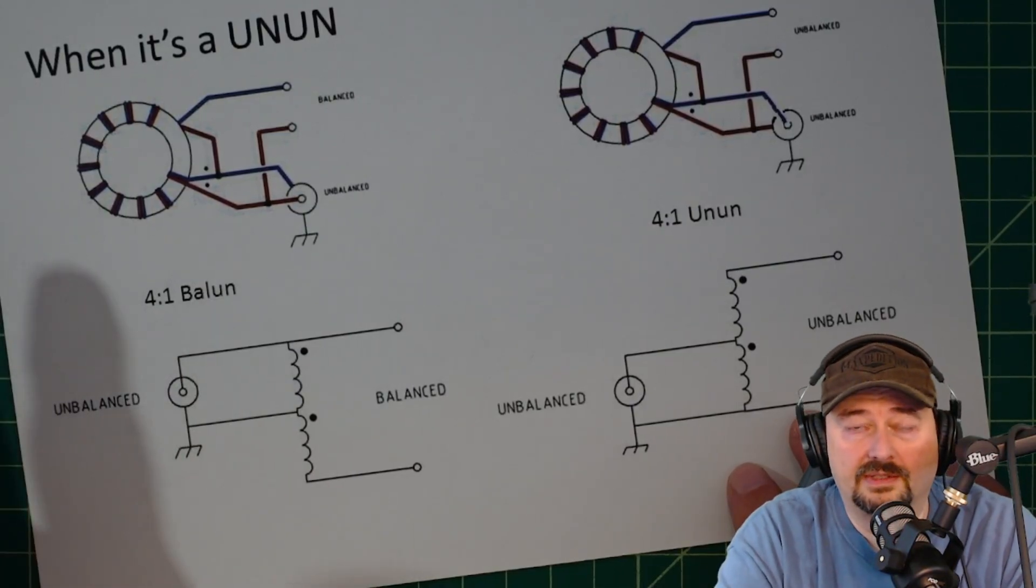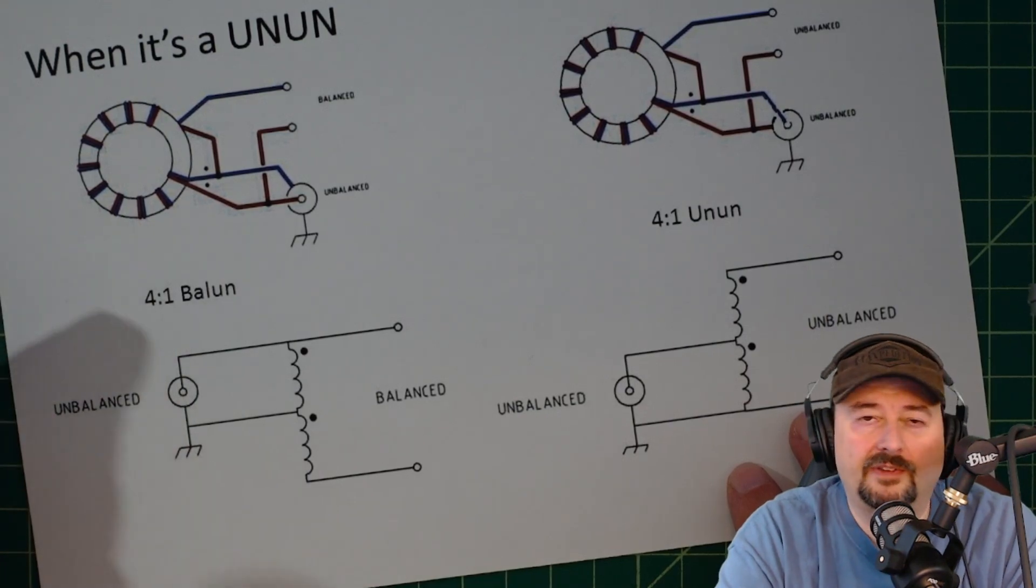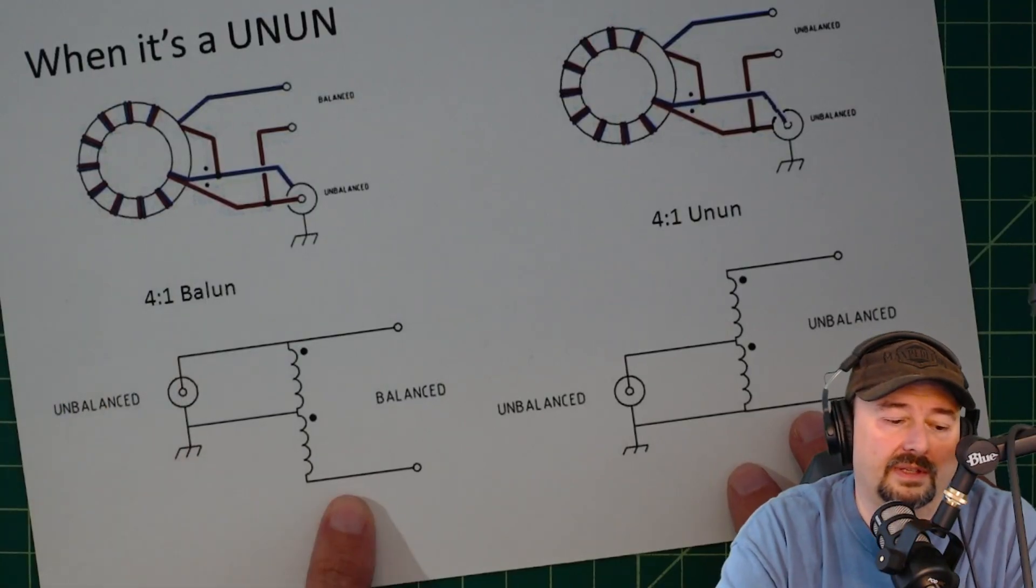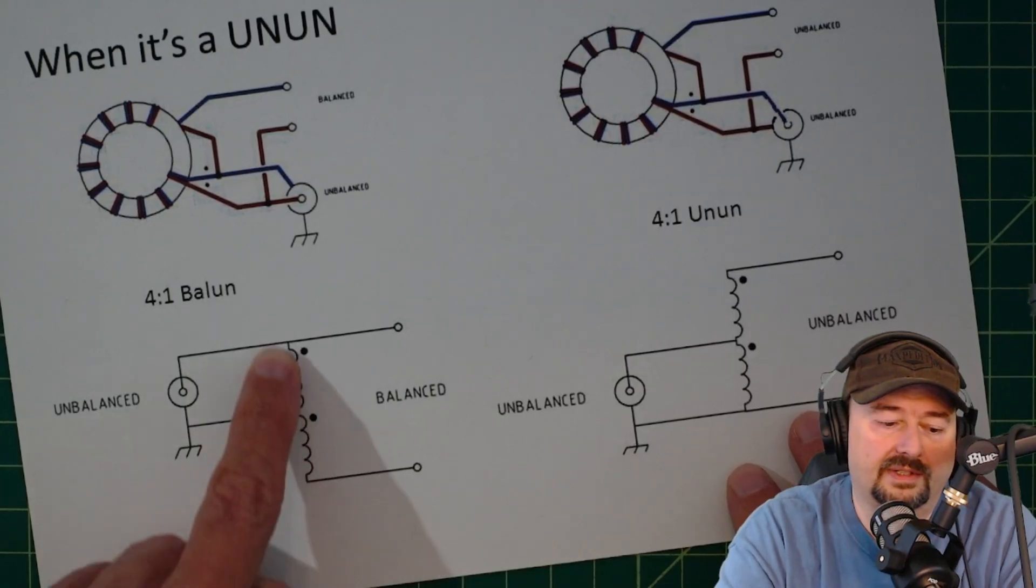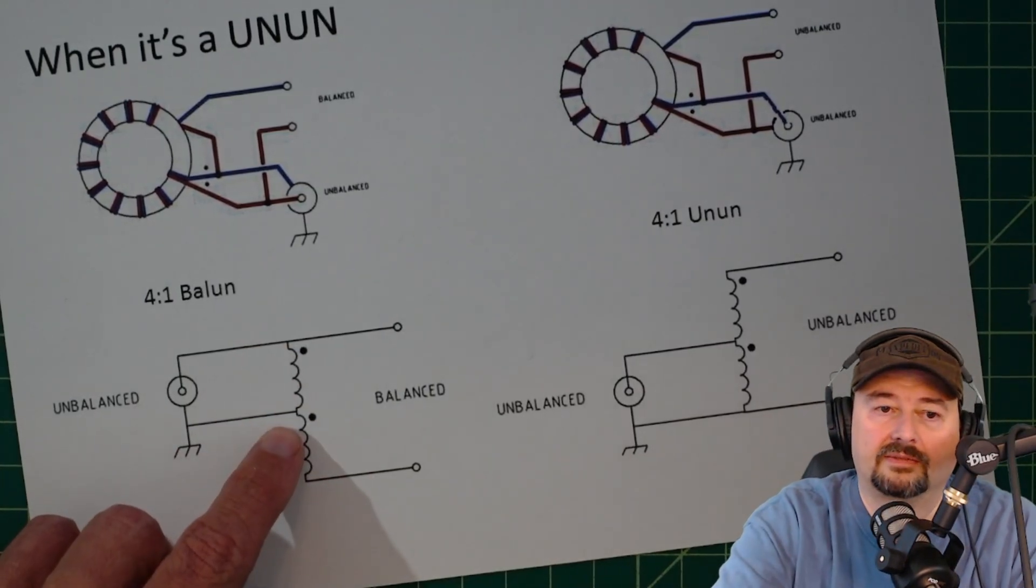In our case that balanced load is going to be an antenna, specifically a symmetrical antenna like a dipole or a Yagi. When you take a look at the schematic, this is where it gets a little bit confusing. You can see our inductor is highlighted here and it's tapped in the center.